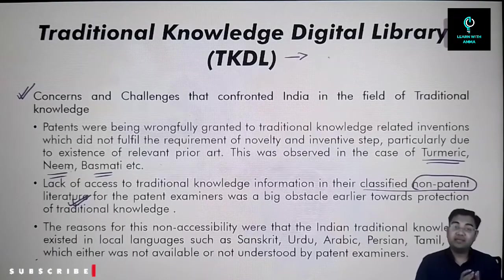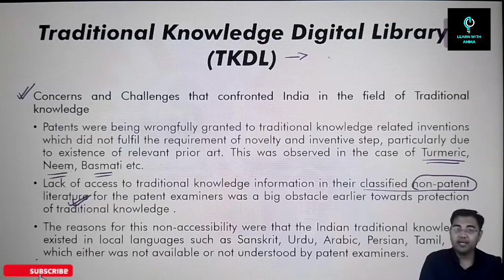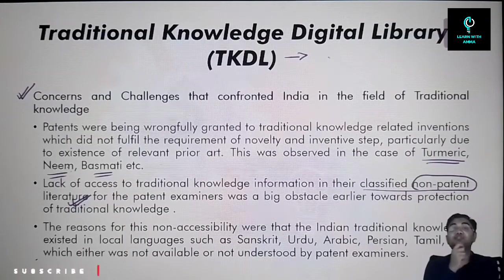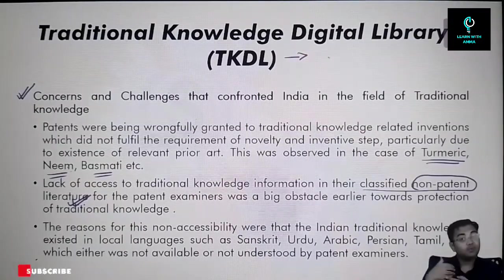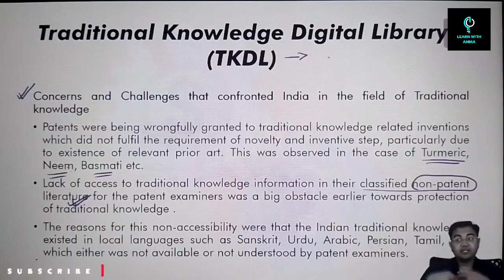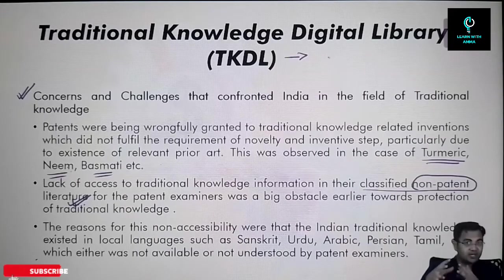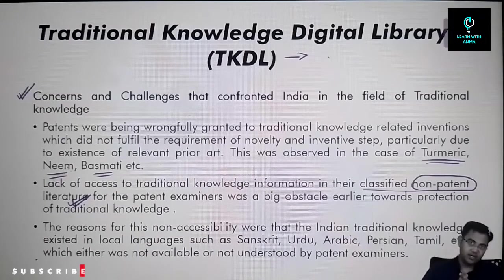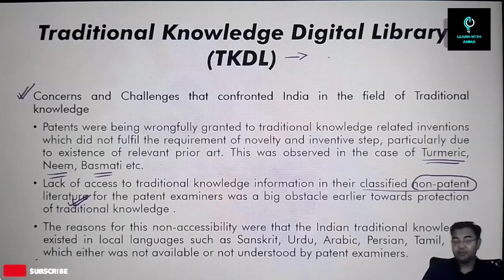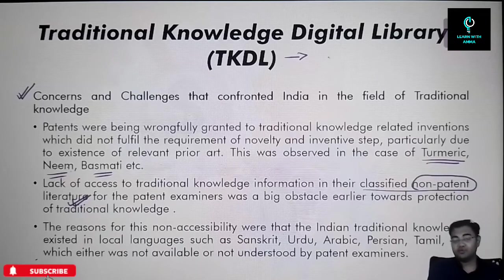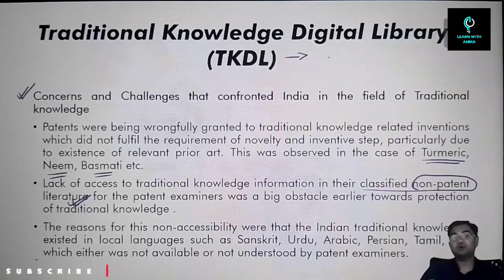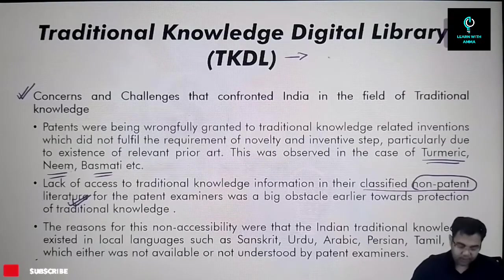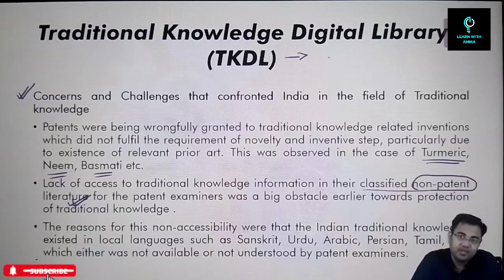To summarize what we've covered in this chapter: we understood the meaning and need for IPR, the different kinds of IPRs, the policy framework in India, some of the challenges India faces regarding IPRs, and finally the meaning of the Traditional Knowledge Digital Library. All these areas could be especially important from a mains perspective, while the first part of the chapter may also be relevant for prelims. This is the end of the chapter — thank you very much for being with us.